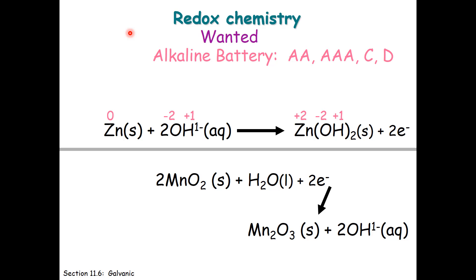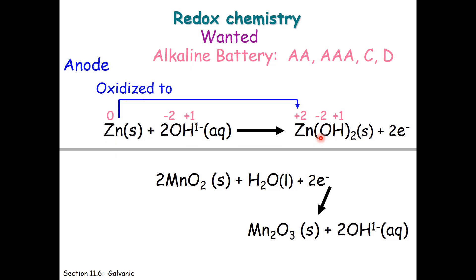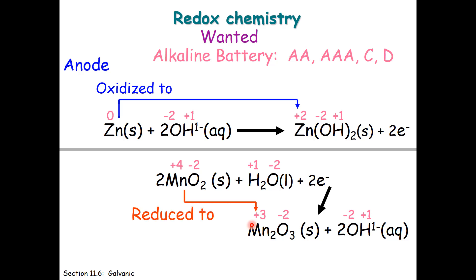Let's get the oxidation states for the top reaction. You notice that zinc is going from zero to plus two — the zinc is being oxidized, so this is naturally the anode compartment. For the bottom reaction, we focus on manganese. The manganese goes from plus four to plus three, so it is reduced, and this therefore is the cathode compartment of the battery.